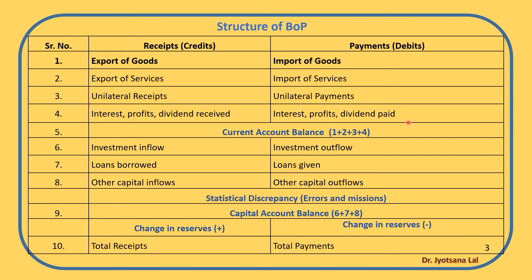Under the capital account, all kinds of capital inflows and outflows are recorded. Investment done in other countries is an investment outflow, while foreign countries investing in our country in the form of FDI or FPI is recorded in the credit side as investment inflow. Loans borrowed from other countries — medium term or long term — or borrowed from international financial institutions are recorded in the credit side, while loans given to other countries are recorded in the debit side. Points 6, 7, and 8 together form the capital account balance.